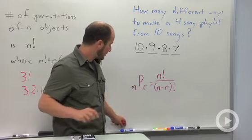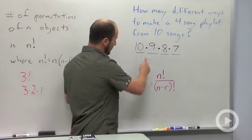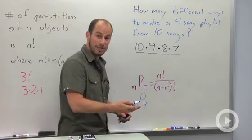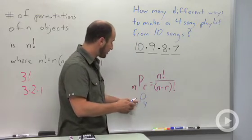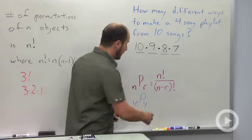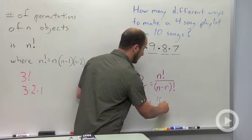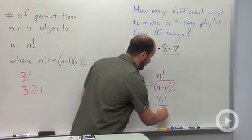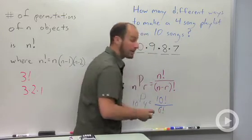What we're looking at then is 10 permute 4. We're choosing out of these ten songs, we're taking four of them, which is going to work out to be 10 factorial divided by (10 minus 4) factorial, or 6 factorial.